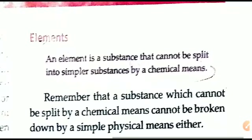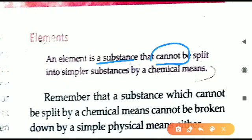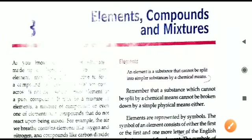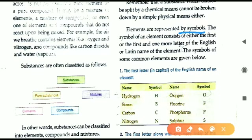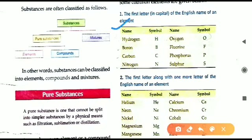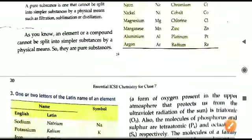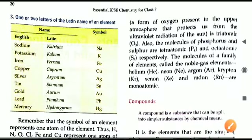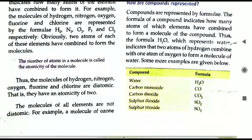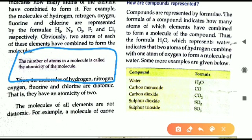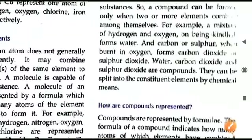As a recap from the last video: an element is a substance that cannot be split or broken into smaller or simpler substances by chemical means. Elements are written using symbols, and there are three rules for writing symbols. We also discussed molecules of an element and atomicity — that is, the number of atoms present in a particular molecule — which is of different types.